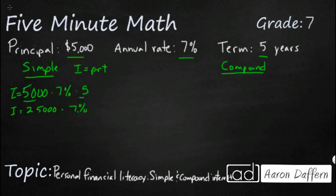We need to make 7% a decimal, so we move the decimal over twice to get 0.07. Now let's do a little multiplication: 25,000 times 0.07. That gives us 35 in the ones place, then 14 and 17 carried over. Remember, I've got two digits by the decimal in the factors, so two digits by the decimal in my product. We get $1,750 as interest.